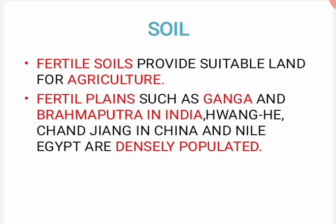Soil: agar soil bahut zyada fertile hai, bahut zyada achi hai, toh agriculture activities hongi, toh obviously population zyada hogi. Agar soil fertile nahi hai, wahan par agriculture production nahi hai, toh log kam rahenge — kyunki wahan production nahi hai, kaam nahi milega, food easily available nahi hoga.